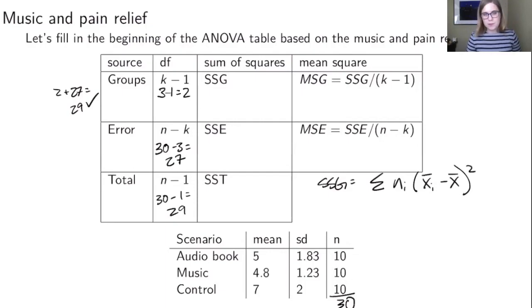And because we have three groups it's going to be three things that get added together. It's going to be n1 x bar 1 minus x bar squared plus n2 x bar 2 minus x bar squared plus n3 x bar 3 minus x bar squared. We just have to think about what all of these different numbers are.